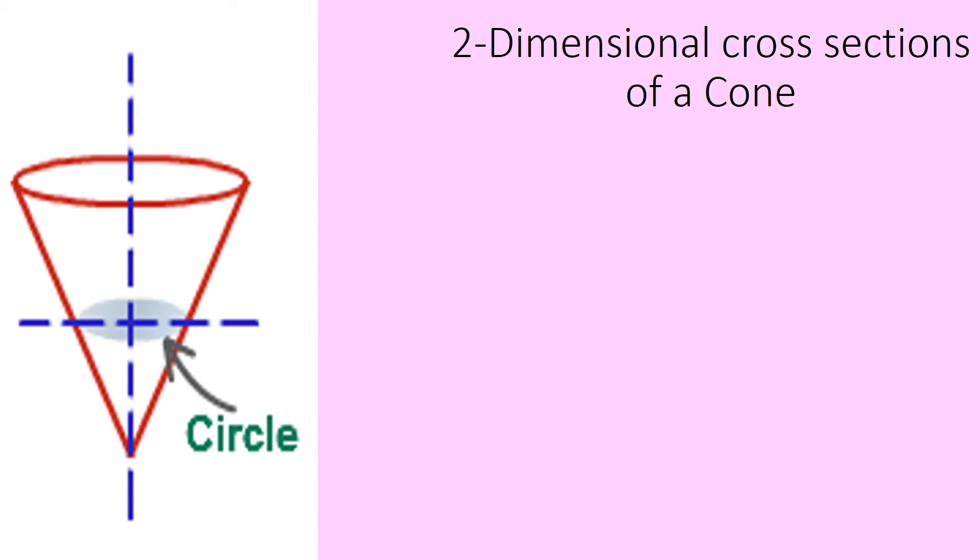Two-dimensional cross-section of a cone. Now the picture shows a horizontal cross-section, and you get a circle. But if I cut it vertically, I'm going to get a triangle.